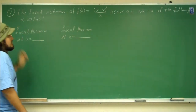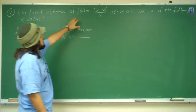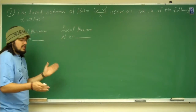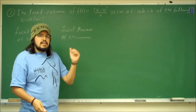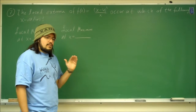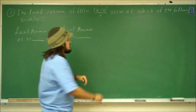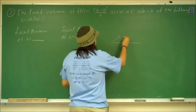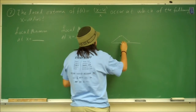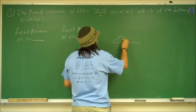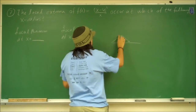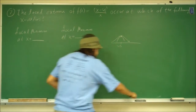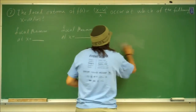In order to find the local min and max, we need to take the first derivative and use the first derivative test to find our critical numbers. Once we do that, we'll use test points to see what intervals the function is increasing and what intervals it's decreasing. If you have an interval that goes from increasing and then to decreasing — say 5 was our critical number — then we know at x equals 5 there is a maximum, because in order to go from increasing to decreasing, we need a max point there. So let's go ahead and take the first derivative and do the first derivative test.